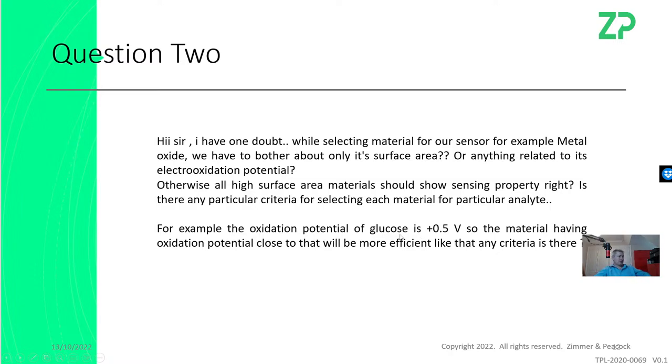Question two, this is a really tricky one. Question two is asking about selecting materials for sensors. I think the question is: is it only the surface area or do we have to consider the electrooxidation potential? The quick answer is you can't just use any materials to make an electrochemical biosensor. Earlier on, I was talking about PCBs. You can't just use PCBs. If the exposed material was copper, it'd probably be an absolute disaster. But if it's copper covered in gold, it sounds like it could work.